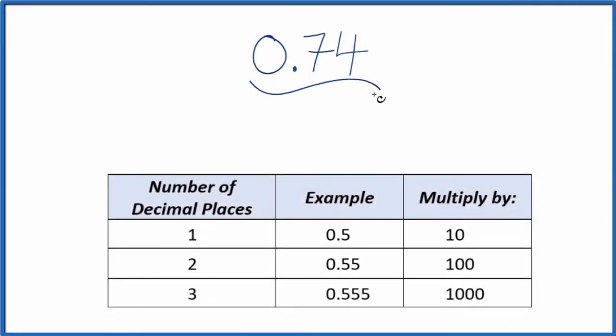Let's convert the decimal 0.74 to a fraction. So first off, let's call it 0.74 over 1. We're just dividing by 1. We haven't changed the value, but now we have the start of a fraction.